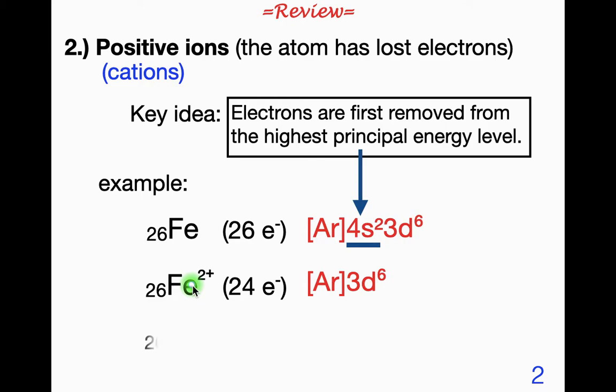Now iron also can have a positive 3 charge. So we would have one more electron that we would need to remove here. And at this point, then we would go ahead and remove it from the 3d, because the valence electrons have already been removed.